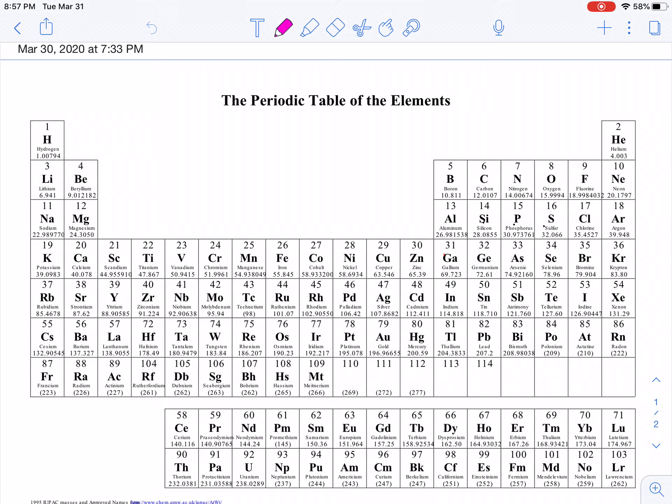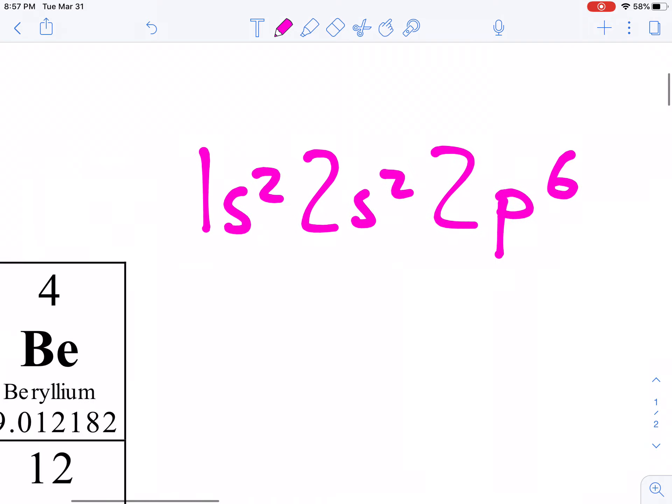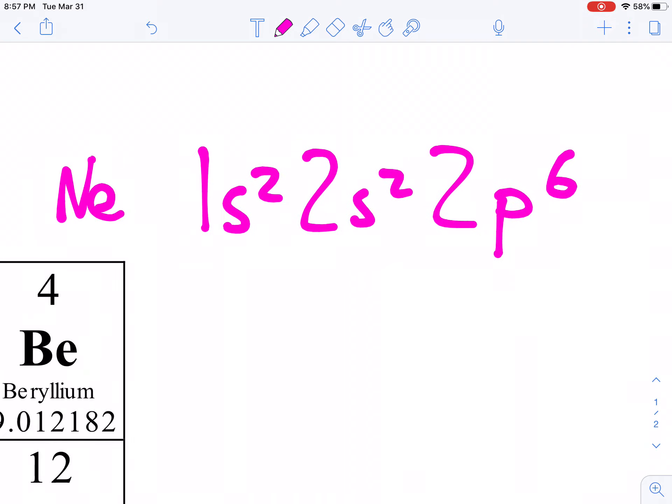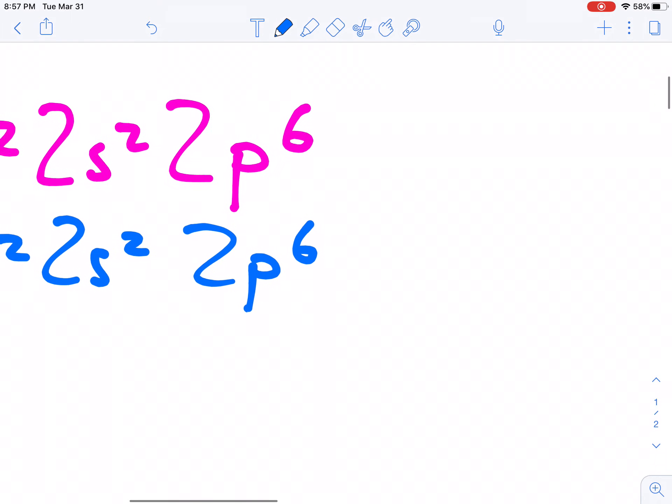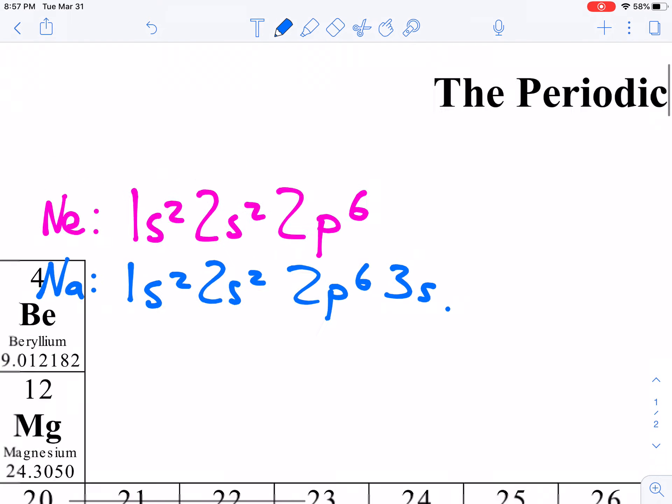So hopefully you have yourself a periodic table. I want to do something here briefly for us. I'm going to write out the electron configuration for neon, and then I'm going to write out the electron configuration for sodium. So just as a review, for neon, it would look like this: 1s2, 2s2, 2p6.